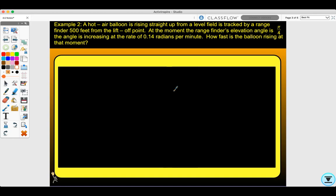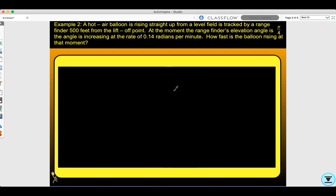Let's look at Example 2. A hot air balloon is rising straight up from a level field and is tracked by a rangefinder 500 feet from the liftoff point. At the moment the rangefinder's elevation angle is π/4, the angle is increasing at a rate of 0.14 radians per minute. How fast is the balloon rising at that moment?